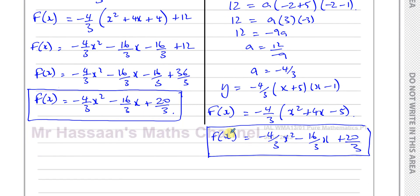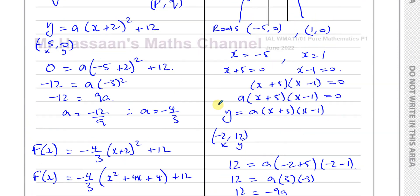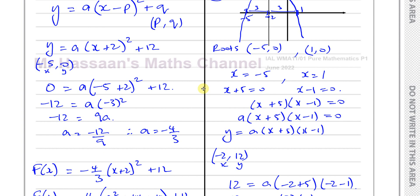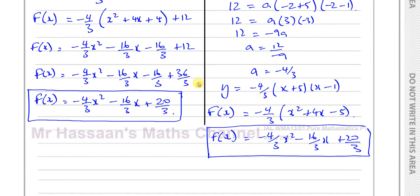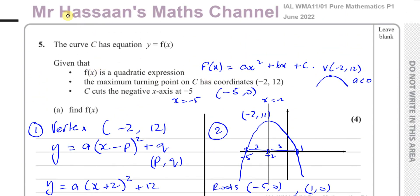One reason I showed both methods is so you have different approaches. The second reason is that since the mark scheme hasn't been released for this paper yet, getting the same answer from two different methods confirms I've done the right thing. Actually, there's a third method we could use, which I personally don't prefer — but maybe those of you who like algebra and simultaneous equations might appreciate it.